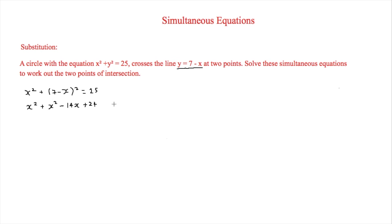That gives us 2x squared minus 14x plus 24 equals 0. To simplify further, divide everything by 2 to get x squared minus 7x plus 12 equals 0.